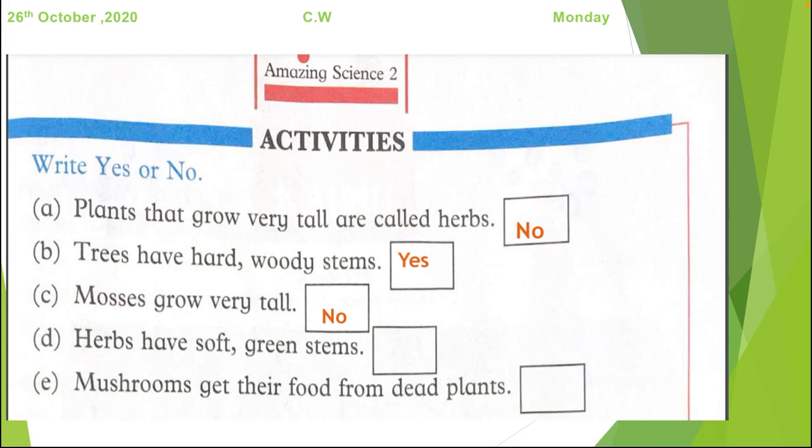Herbs have soft green stems. As I have told you before, what herbs are. They are coriander, mint, spinach. So their stems are very soft that we can break with our hand. So this statement is true. Yes.